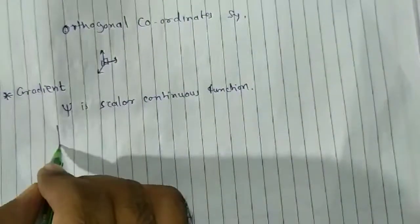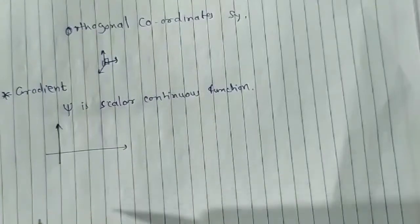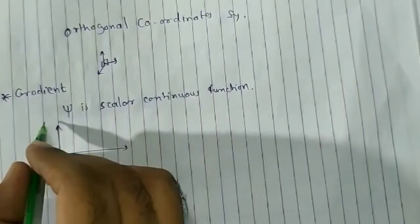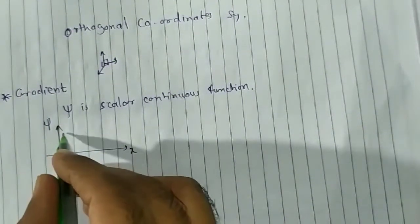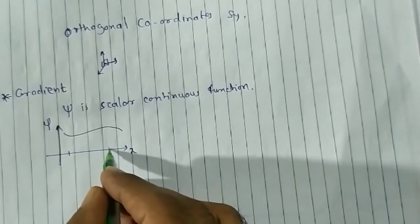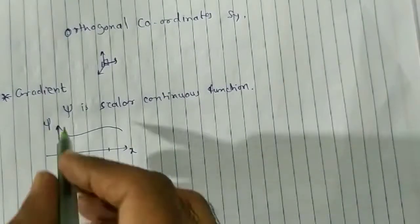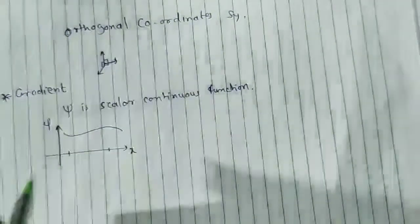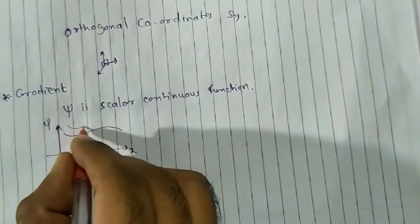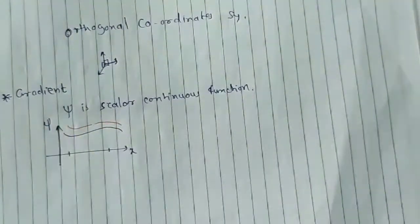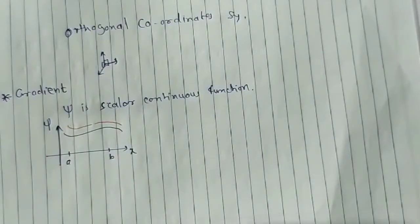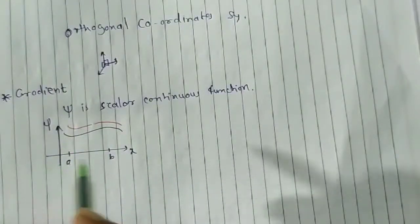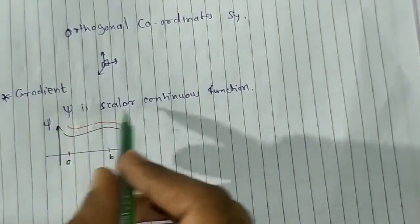First we will understand what is meant by a continuous function. If I draw a graph of ψ with respect to some variable, say x, then over a given range it should not have any break. If this function has a break like this, then you can say it is a discontinuous function for a given range — say from a to b, or for a given interval.